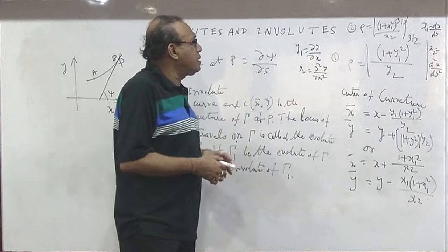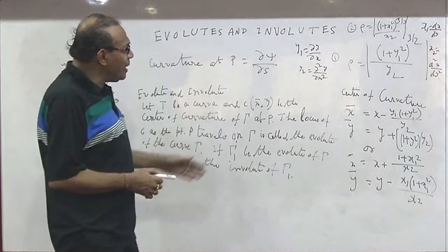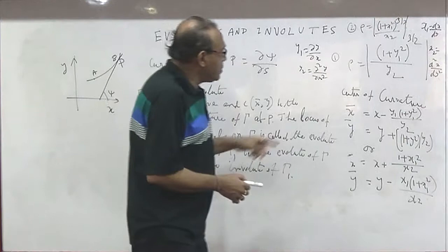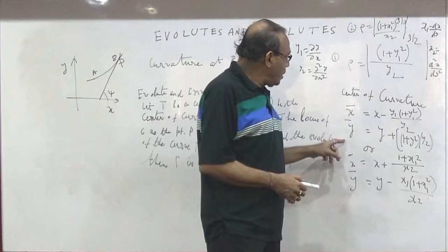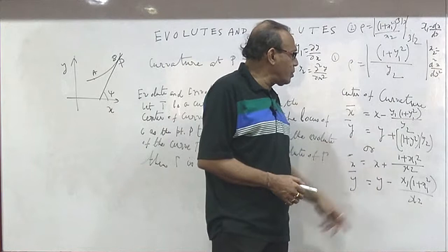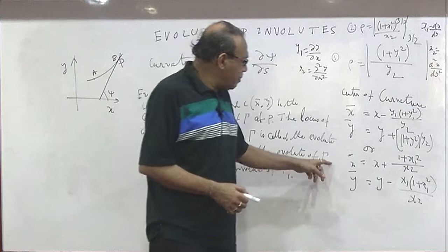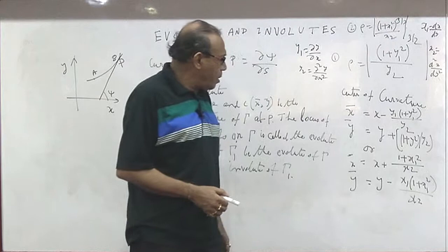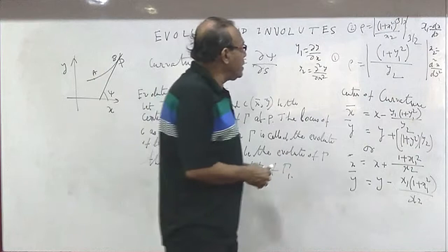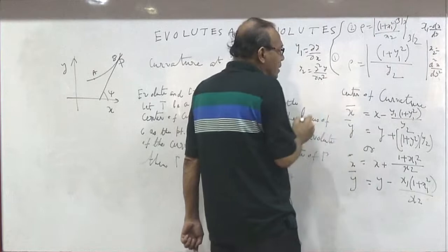The second concept is the center of curvature. x̄ and ȳ are the center of curvature: x̄ = x − y₁(1 + y₁²)/y₂ and ȳ = y + (1 + y₁²)/y₂, where y₂ ≠ 0. If y₂ equals 0, we use the alternate formula: x̄ = x + (1 + x₁²)/x₂ and ȳ = y − x₁(1 + x₁²)/x₂, where x₂ ≠ 0.